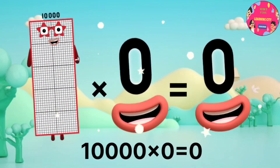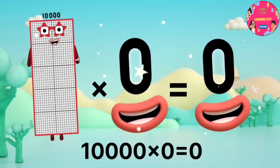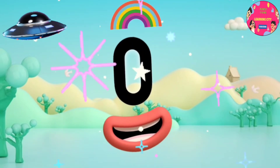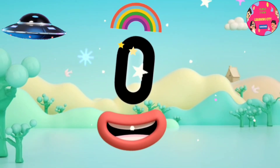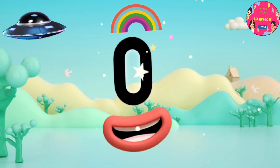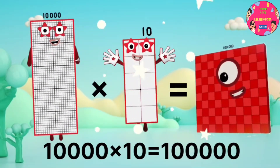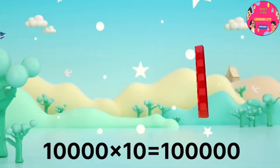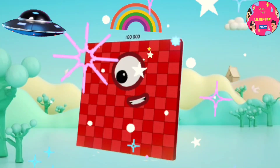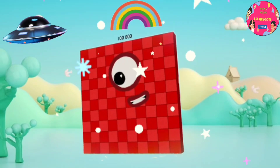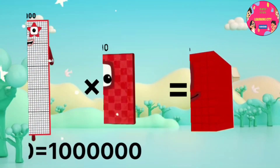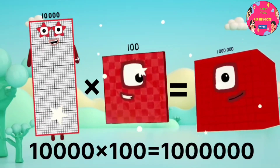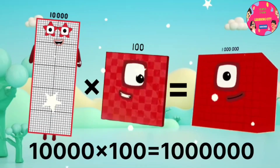1000 x 10 equals 100,000. 10,000 x 100 equals 1,000,000.